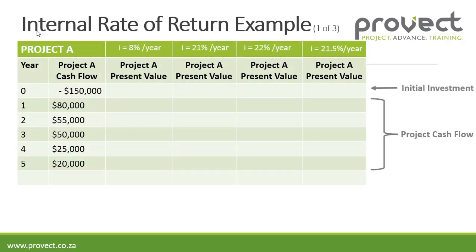We're going to start off with project A, where we've got an initial investment of $150,000, and the project cash flow for each year — which is income minus expenses. For year 1 it's $80,000, year 2 $55,000, year 3 $50,000, year 4 $25,000, and year 5 $20,000. That is our cash flow.